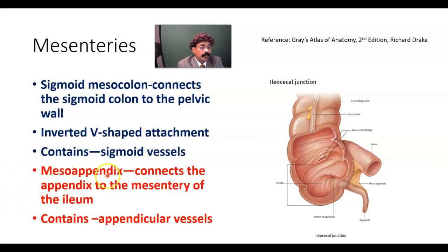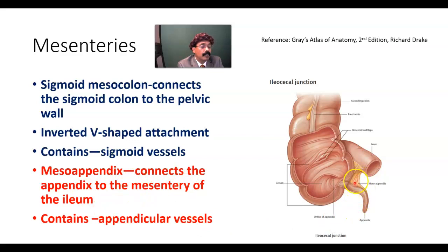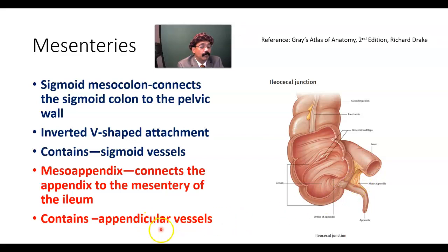The mesoappendix is the mesentery for the appendix. It connects the appendix to the mesentery of the ileum. It contains the appendicular artery, which is a branch of the ileocolic artery.